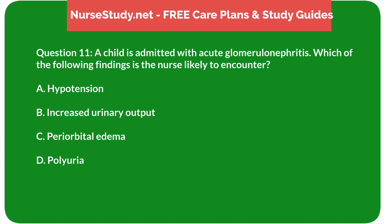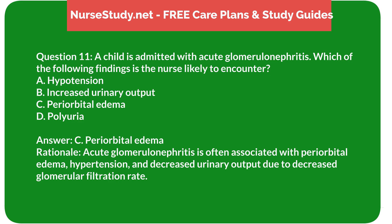Question 11: A child is admitted with acute glomerulonephritis. Which of the following findings is the nurse likely to encounter? A) hypotension, B) increased urinary output, C) periorbital edema, D) polyuria. Answer: C) periorbital edema. Rationale: Acute glomerulonephritis is often associated with periorbital edema, hypertension, and decreased urinary output due to decreased glomerular filtration rate.